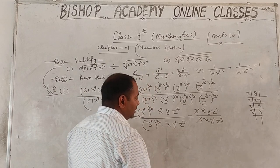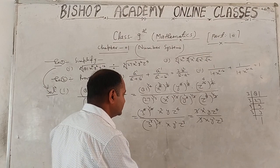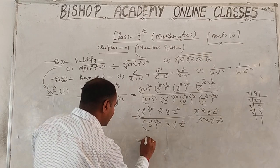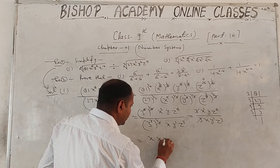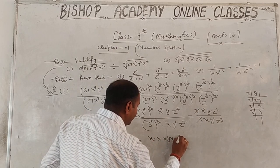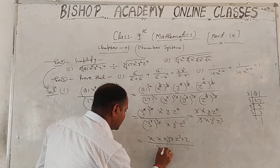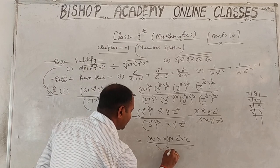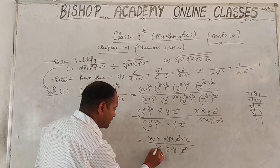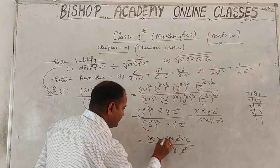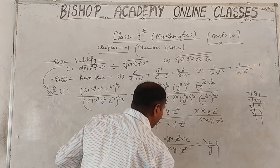After cancellation: 3 cancels with 3. Then x² / x = x, y / y² = 1/y, z⁴ / z³ = z. The required answer for part one is xz upon y.